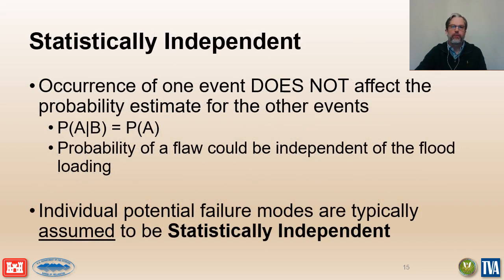Events are statistically independent if the occurrence of one event does not change the probability estimate for the other events. The probabilities for individual potential failure modes are typically estimated assuming that the potential failure modes are statistically independent. In most cases, but not necessarily every case, this is a reasonable simplifying assumption for a risk analysis.